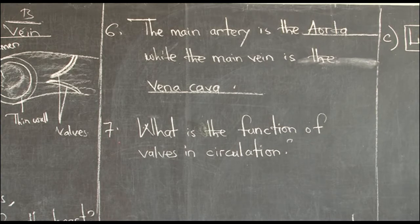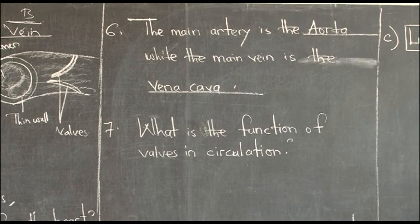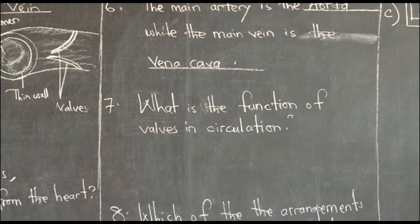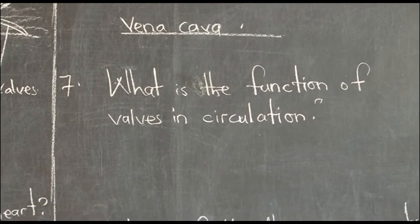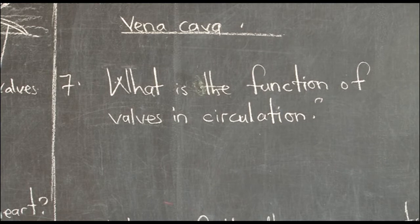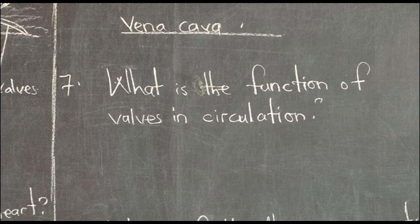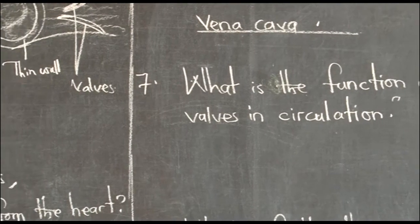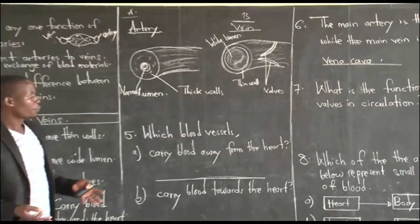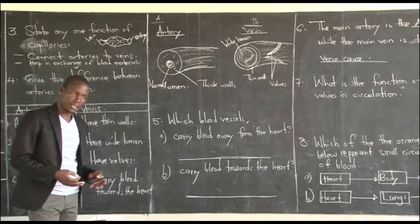Number seven asks: what is the function of valves in blood circulation? We looked at this when talking about veins — veins have valves. The function of valves during blood circulation is to prevent backflow of blood. There are different valves in the body and within the heart, such as the tricuspid valve, the bicuspid valve, and the semilunar valves. Please check on that.